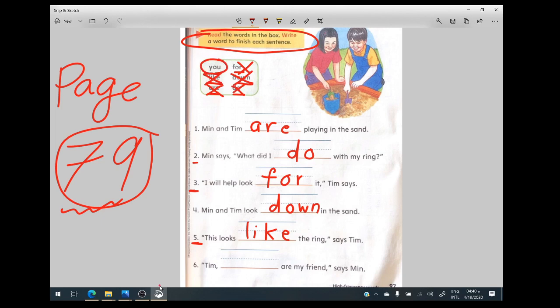Let's cross out the words like and down. I still have the word you. Let's see if it's fitting our blank or not. Tim, you are my friend, says Men. Yes, so Tim you are my friend. It will be the word you. Great job everyone. Let's go to our second page for today.